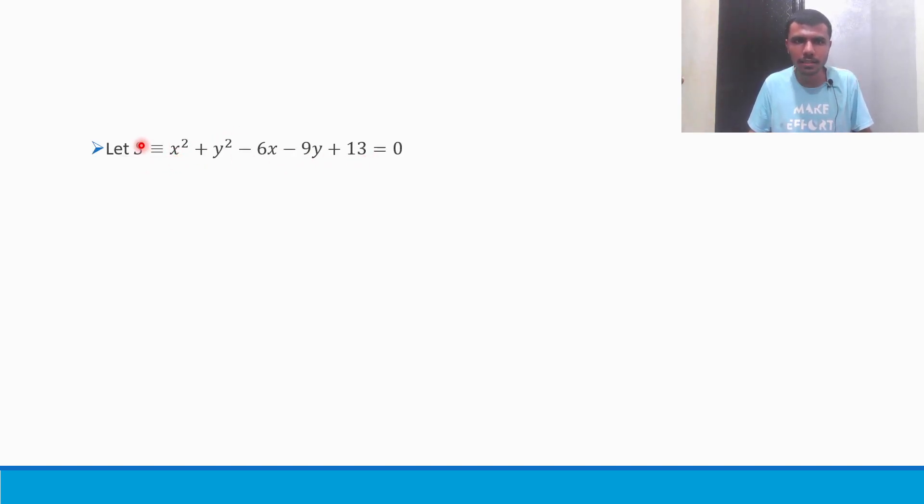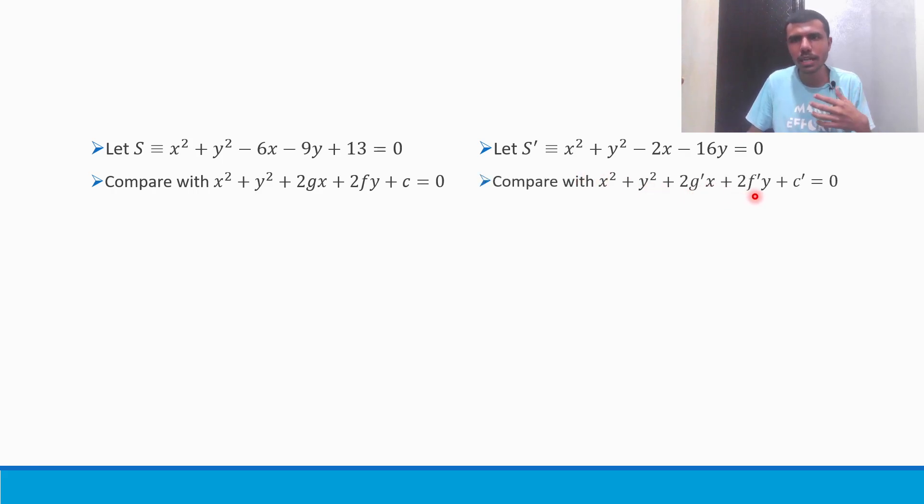Now, how to start? See guys, first, we have to find out the center and radius of both the circles. That's the beginning. Let's get started. So take the first circle as S. You can see guys, I'm using notation. S is representing the first circle and S dash is representing the second circle.